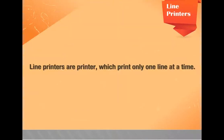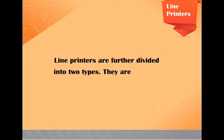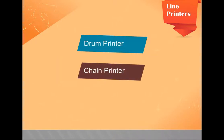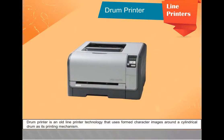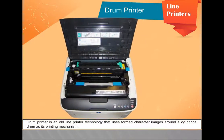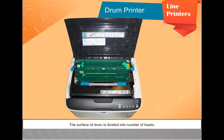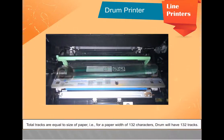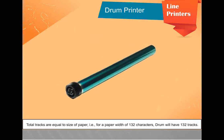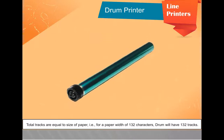Line printers print only one line at a time and are further divided into two types: drum printer and chain printer. A drum printer is an old line printer technology that uses formed character images around a cylindrical drum as its printing mechanism. The surface of the drum is divided into a number of tracks. Total tracks are equal to the size of the paper; that is, for a paper width of 132 characters, the drum will have 132 tracks.